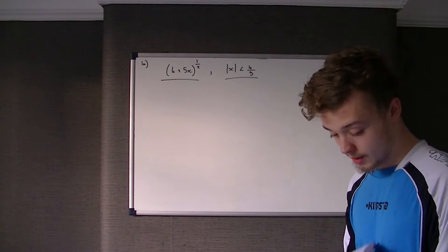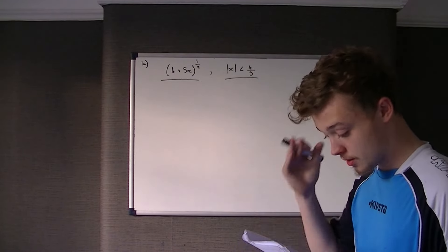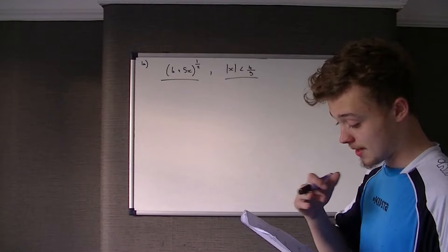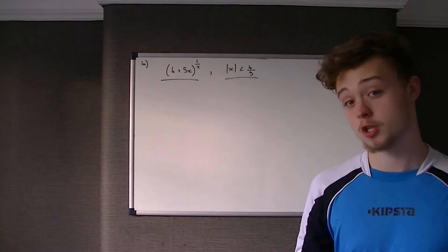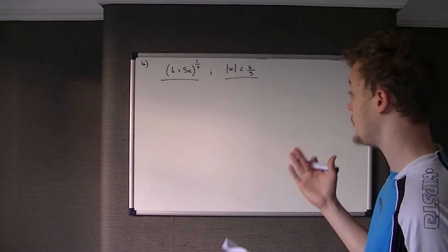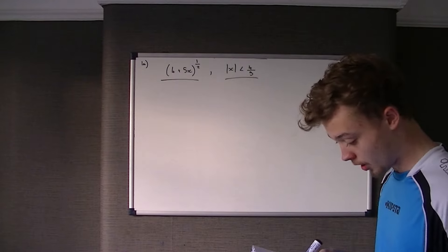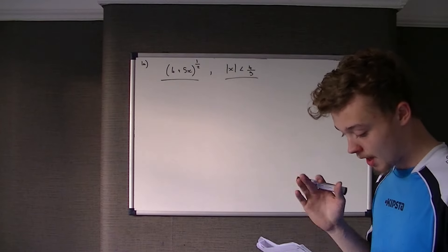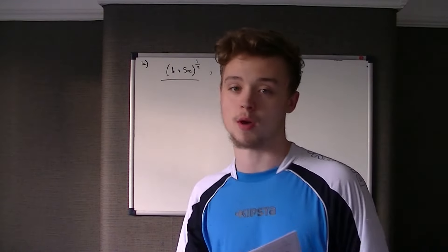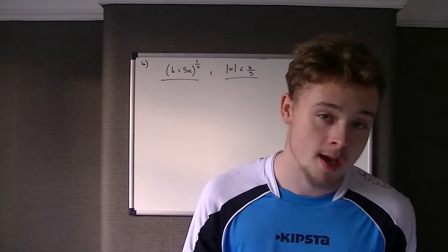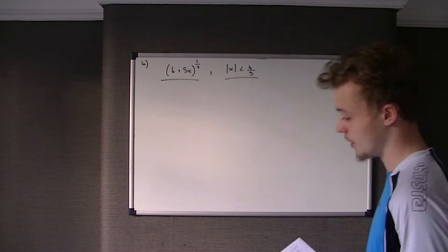Part A says: find the binomial expansion of (4 + 5x) to the power of a half, in ascending powers up to and including the x squared term.